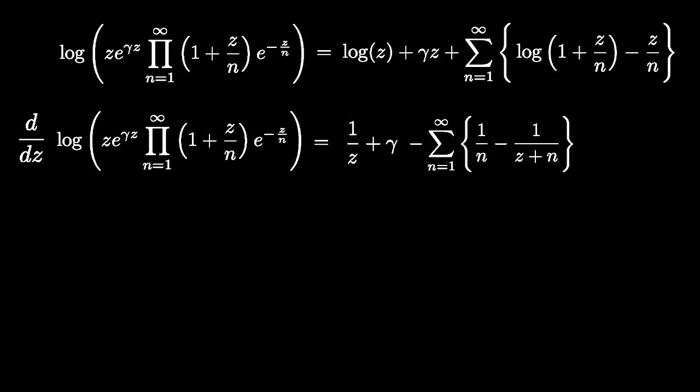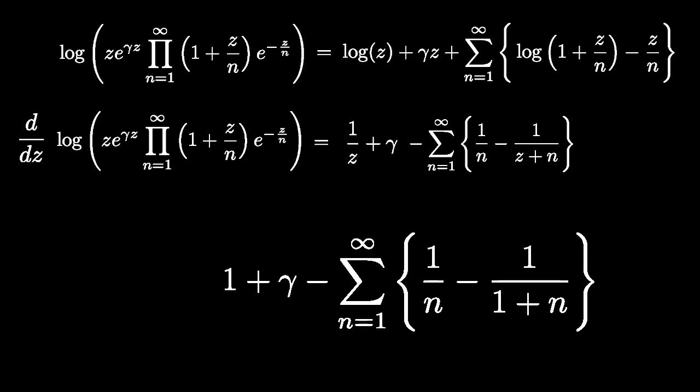Plugging Z equals 1 into this expression, we find that the logarithmic derivative of the Weierstrass canonical form is equal to the Euler-Mascheroni constant.